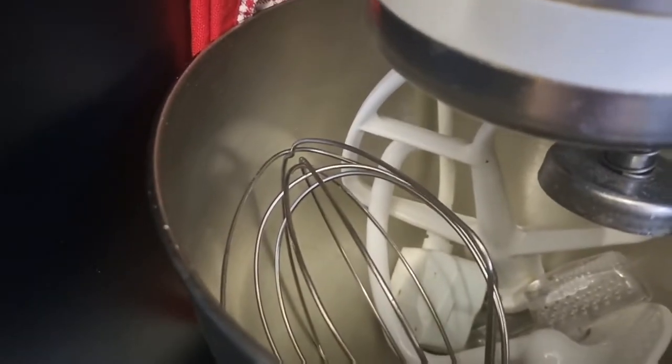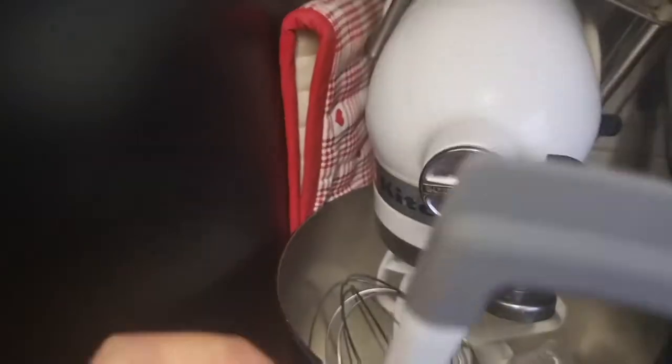It came with the attachments that you can see there plus we purchased this one with the silicone edges so it really really scrapes around the sides of the bowl, so perfect.